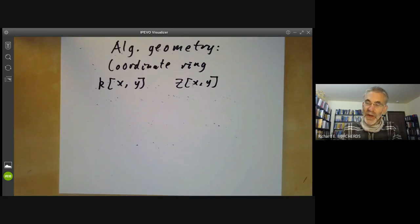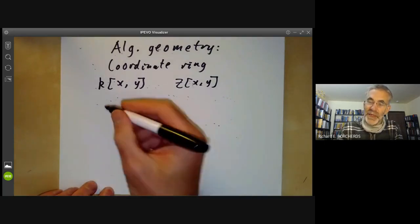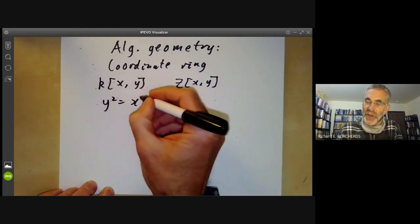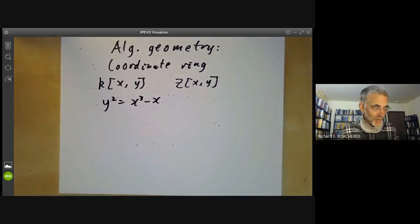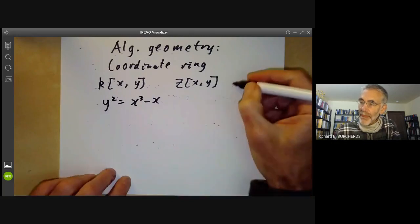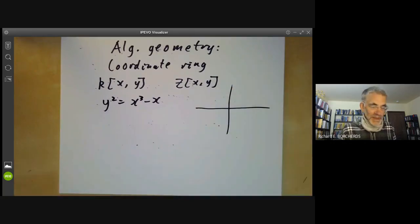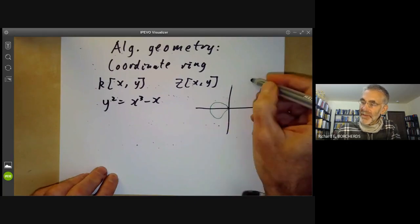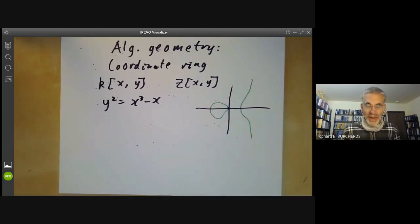You can have slightly more complicated examples. For example, you might take an elliptic curve, y²=x³-x. This looks something like this, an elliptic curve. And you can look at the coordinate ring of this elliptic curve.